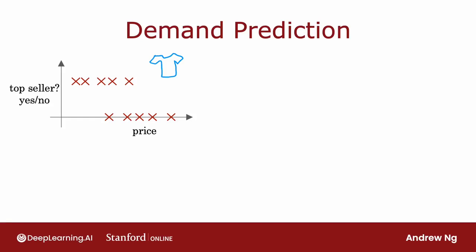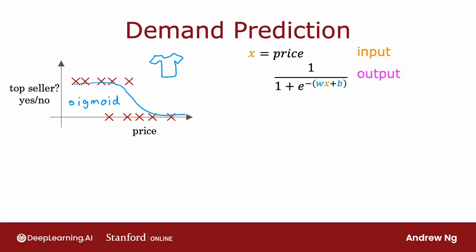So in this example, the input feature X is the price of the t-shirt. That's the input to the learning algorithm. And if you apply logistic regression to fit a sigmoid function to the data, then the output of your prediction might look like this: 1 over 1 plus e to the negative wx plus b.